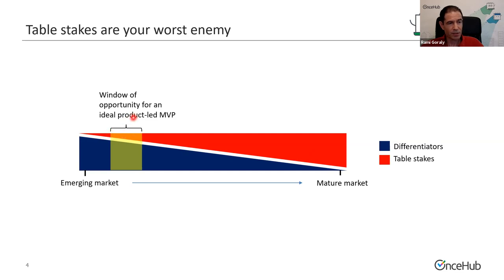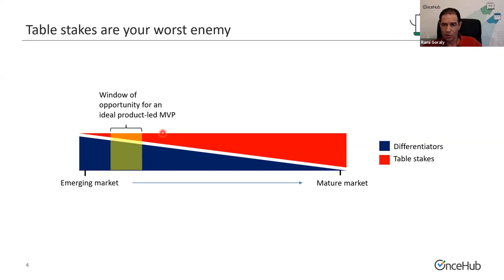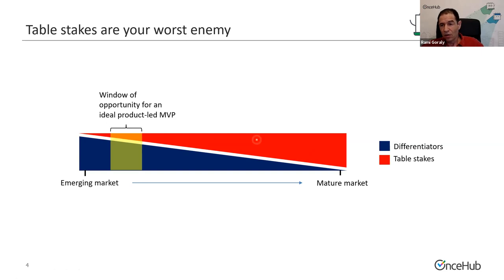The ideal window of opportunity is early on — not so early that the market hasn't picked up yet and there's too much market education needed, but just about the point where early adopters are starting to adopt this type of product. The window can be a year, two years, three years, or shorter, depending on the steepness of the adoption curve. If you want to enter the market later on, your MVP is going to be much bigger.